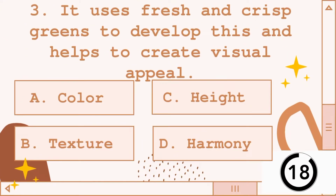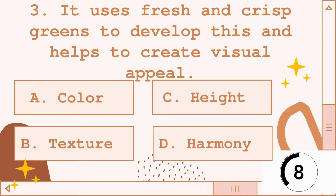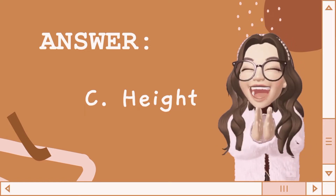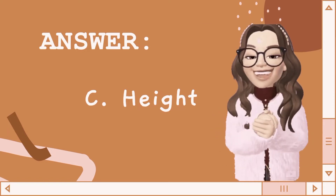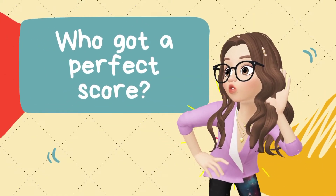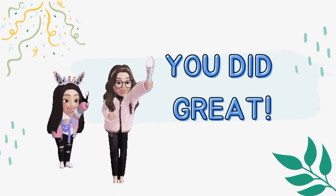Number 3. It uses fresh and crisp greens to develop this and helps to create a visual appeal. A. Color, B. Texture, C. Height, D. Harmony. Answer: C. Height. Who got a perfect score? You did great!